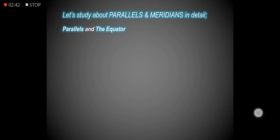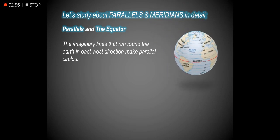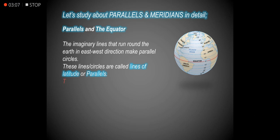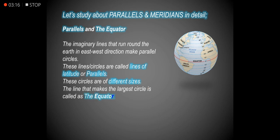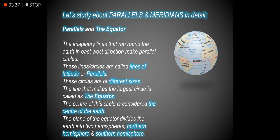The imaginary lines that run around the Earth in the east-west direction make parallel circles. These lines or circles are called lines of latitude or parallels. These circles are of different sizes. The line that makes the largest circle is called the equator, and the center of this circle is considered the center of the Earth. The plane of the equator divides the Earth into two hemispheres: the Northern Hemisphere and the Southern Hemisphere.